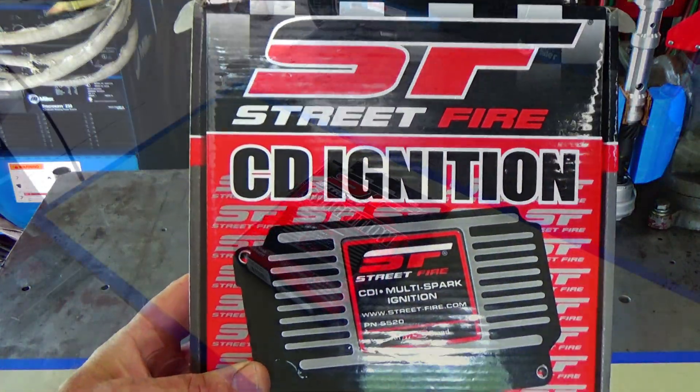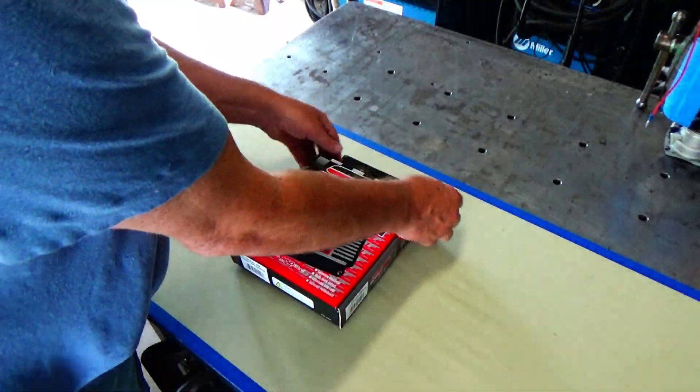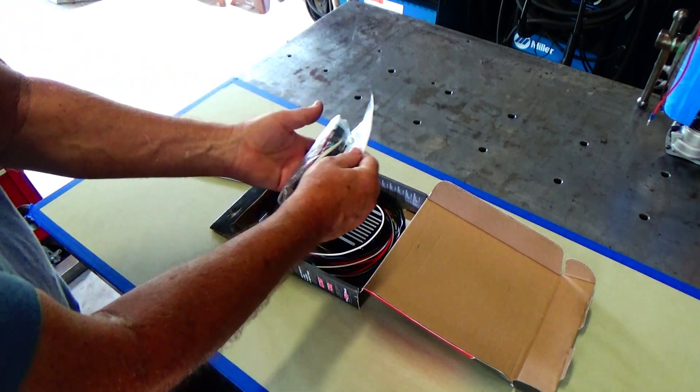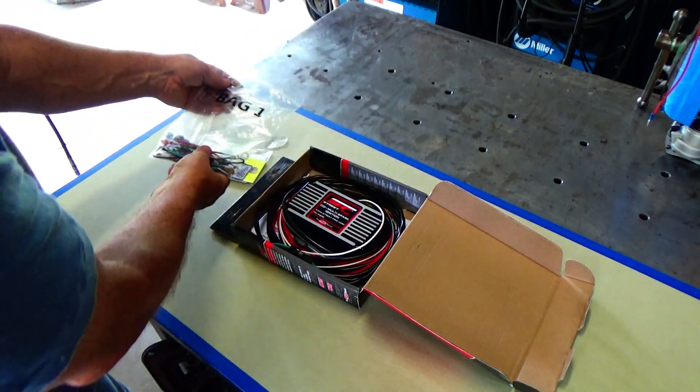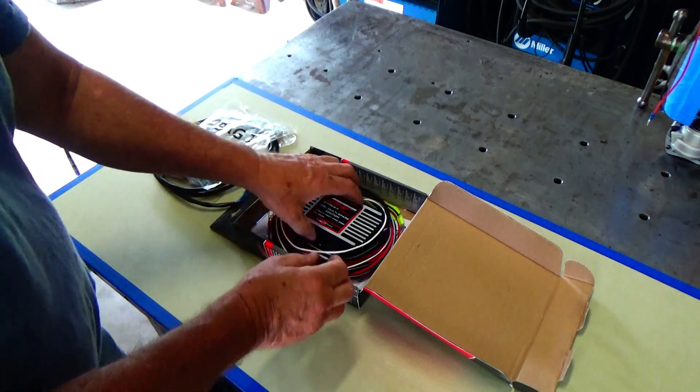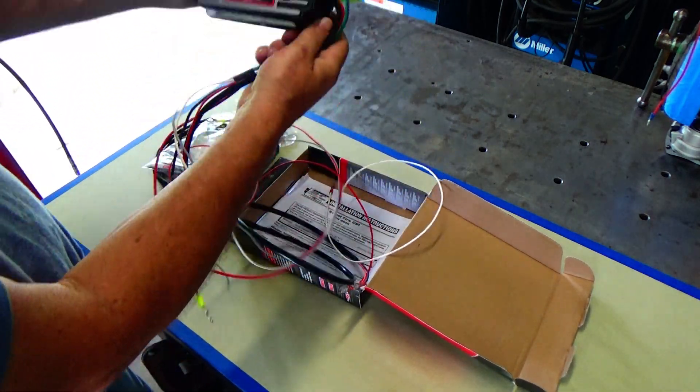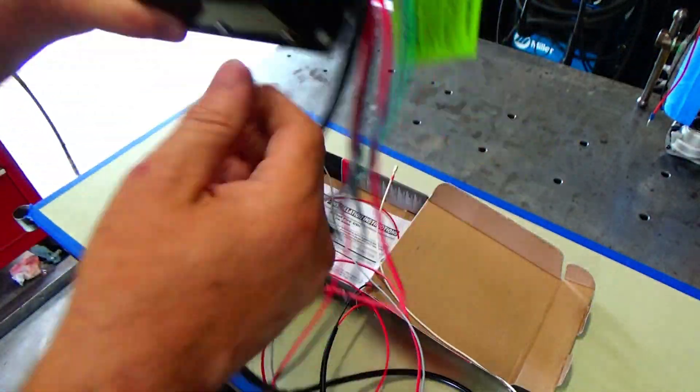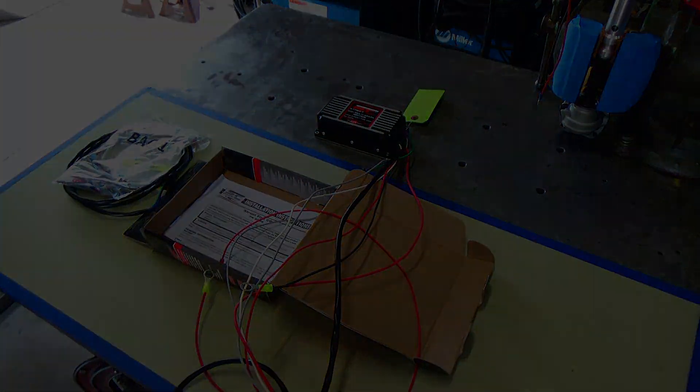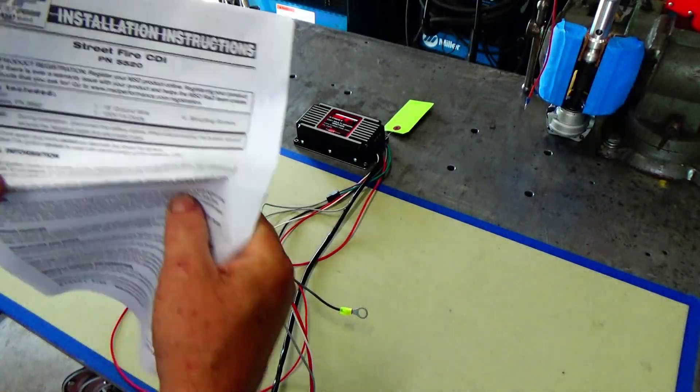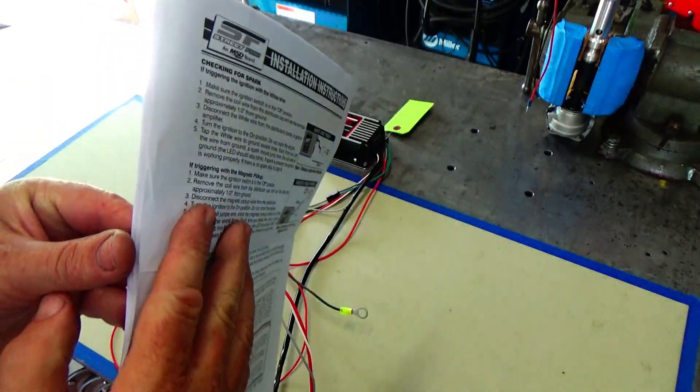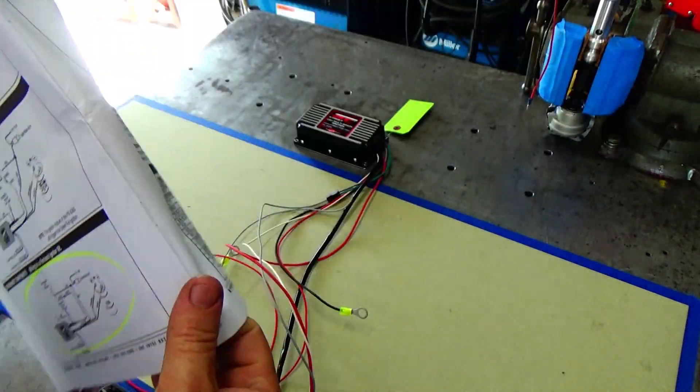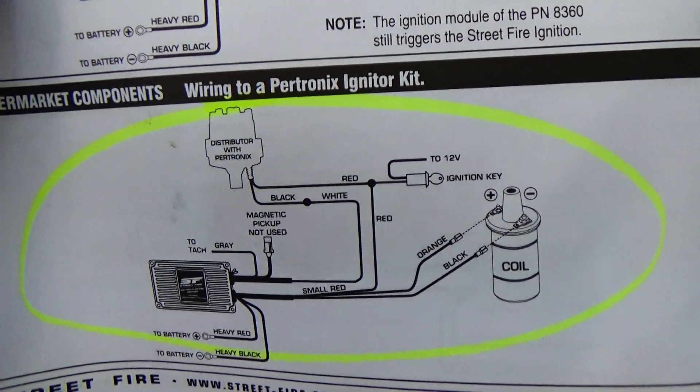Now I'm going to hook up that Street Fire MSD Ignition System. Go ahead and get it out of the box here. So the instructions and it comes with a bag of little fittings and wires. Okay, so you've got the rev limiter and that little LED light also flashes for code. So we'll have to look at that in a later video. Alright, so the instructions, they do have a setup for this Petronix Electronic Ignition. And that's how we're going to wire it up. Just like that.